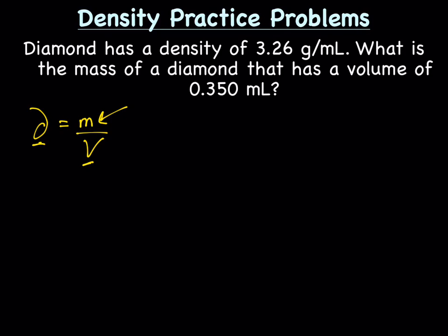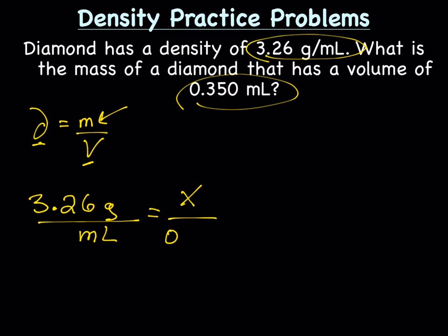We'll start with our density: 3.26 grams per milliliter equals—we don't know the mass, so that'll be our x over volume—0.350 milliliters.